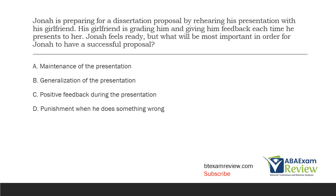Question four: Jonah is preparing for a dissertation proposal by rehearsing his presentation with his girlfriend. His girlfriend is grading him and giving him feedback each time he presents to her. Jonah feels ready, but what will be most important in order for Jonah to have a successful proposal? He's practicing with his girlfriend, she's grading him and giving him feedback. Jonah being able to do the proposal successfully with his girlfriend is good practice, but does it really matter if he can do it just with his girlfriend? Not necessarily — she's not the one ultimately deciding if he's successful.